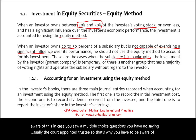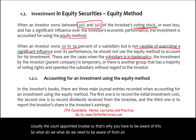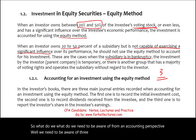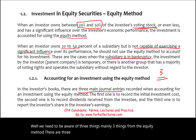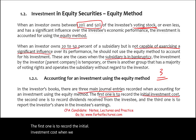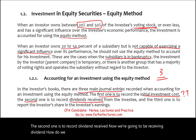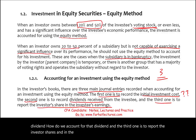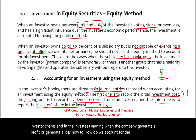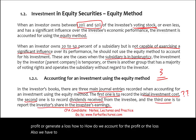From an accounting perspective, there are three main journal entries we need to deal with under the equity method. The first is to record the initial investment cost — how do we record the investment when we buy it? The second is to record dividends received and how we account for them. The third is to report the investor's share of the investee's earnings — how do we account for profit or loss? We also need to account for excess amortization, which we'll discuss later.